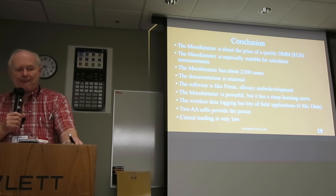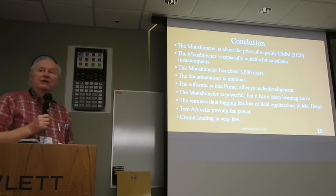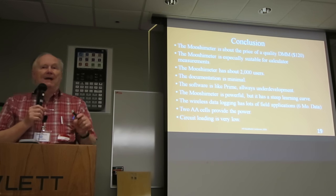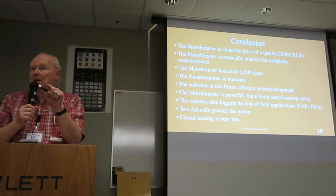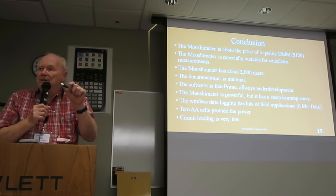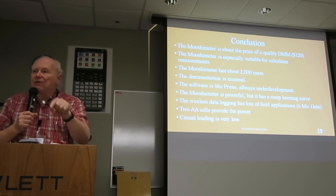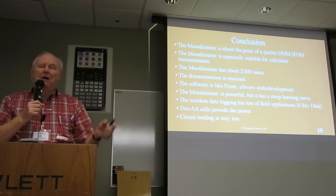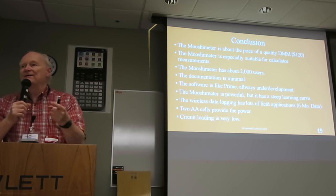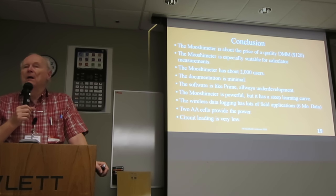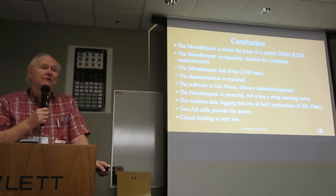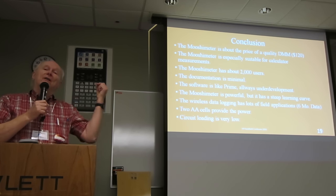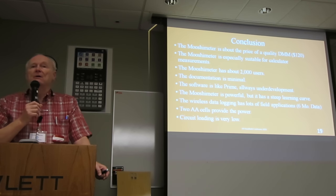There are two AA batteries inside, and the circuit loading is very low. What I had planned to do was to measure the Prime calculator — because I could get a record over a two-second period, I could actually turn the meter on, see the display come up, do a problem, and see all of this in real time in terms of power consumption. We often talk about calculators going into high and low power modes, but they do this so fast we can't tell. The Motometer will give us a much better, faster look at it.